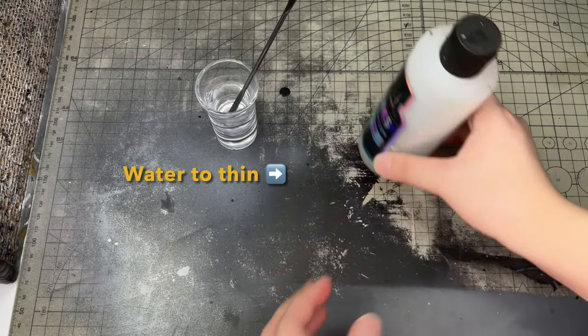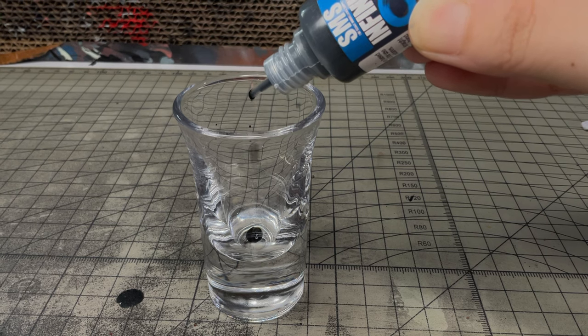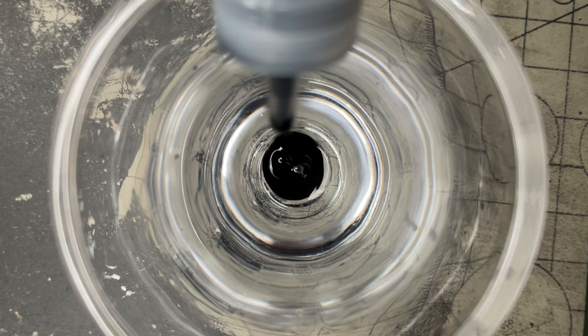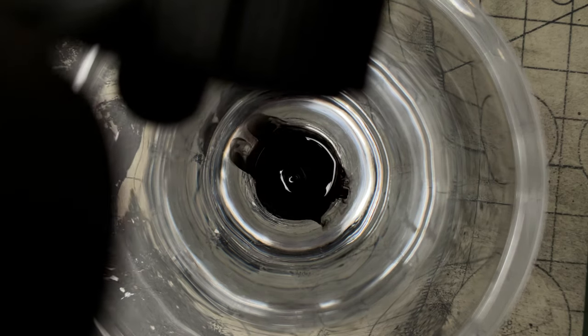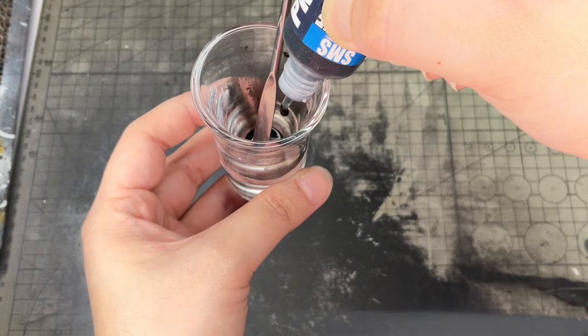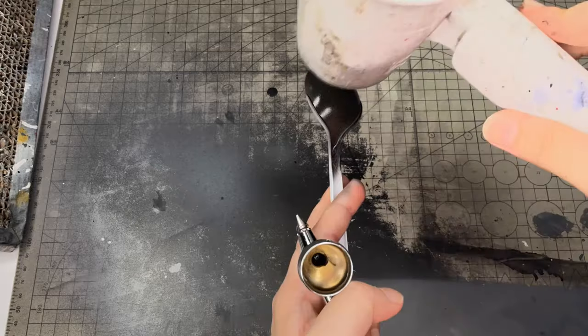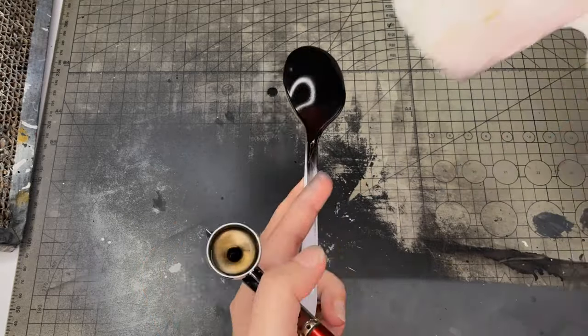I usually mix my paints straight into the airbrush cup, but since we're doing an experiment, it's better to do it in a shot glass. First, we're just going to use water to thin it. Whenever you thin paints for airbrushing, you want a skim milk consistency. I know some people get confused by this, but I think it's a nice baseline, especially since different paint brands have different thinning ratios.